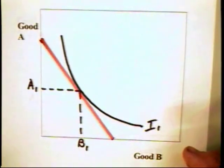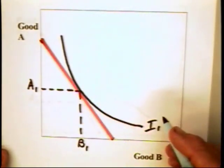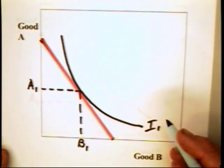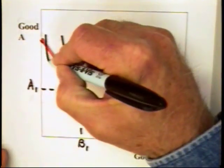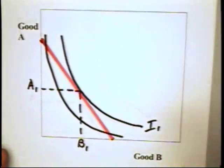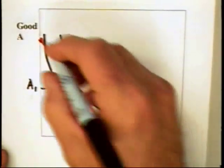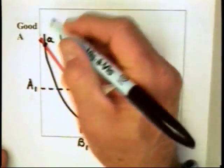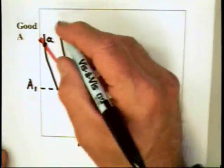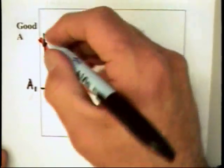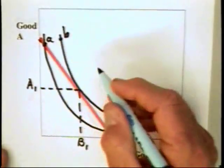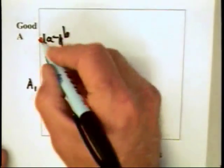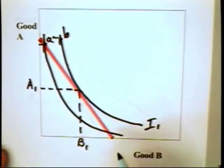The moral of the story is that the indifference curves have got to look something like this in order to get an interior solution, or to have the consumer buying a combination of A and B. We can draw an indifference curve that looks like this, and suppose the individual is at A — then the individual would prefer B to A because there is more of both at B than A.